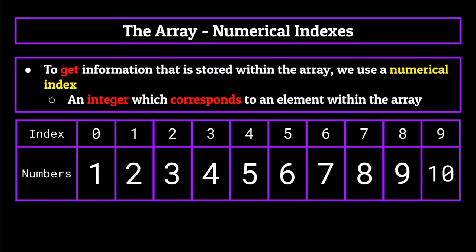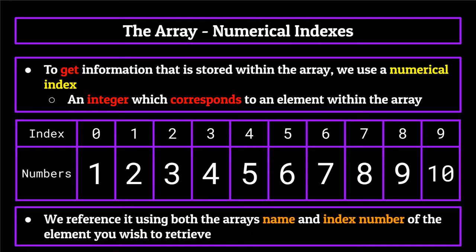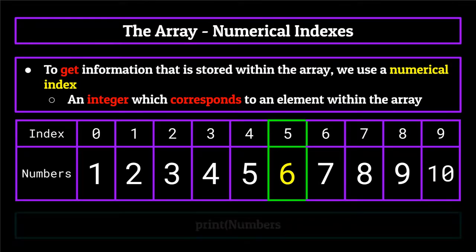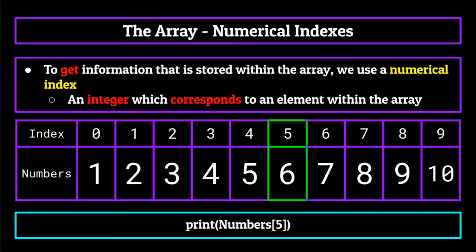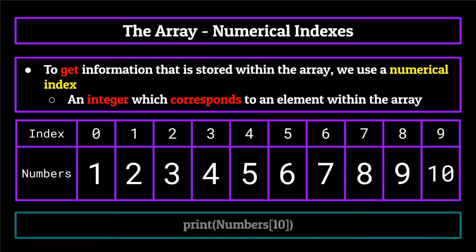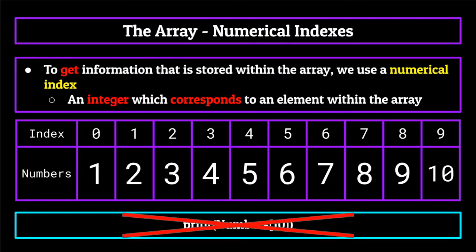To retrieve information from a certain position within the array, you would reference it using both the array's name and then the index number of the element you wish to retrieve. Say we have our array called 'numbers' containing the integers one through ten. To print out the element at the fifth index — in this case the number six — we would reference the array name 'numbers', and then in brackets place the index we want to retrieve, in this case the number five. What this code is basically telling the computer is to print out the fifth index of the numbers array, which is the integer six. Because indexes start at zero instead of one, to get the tenth element you would need to reference it using the number nine. If you make this mistake, it will result in an array out of bounds error.